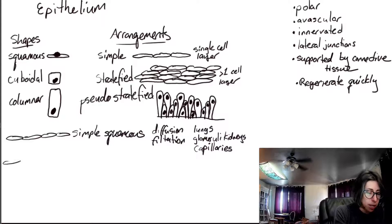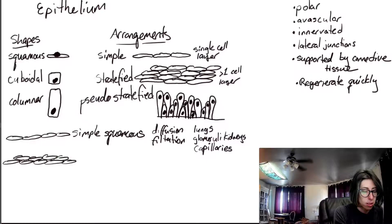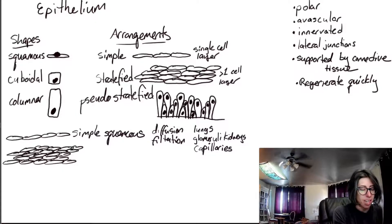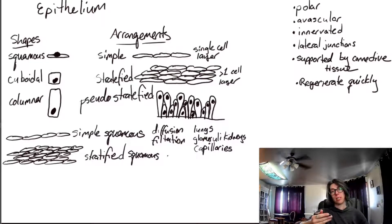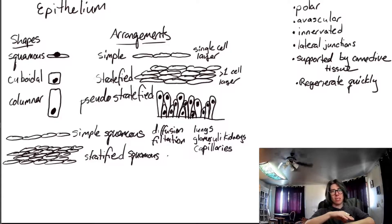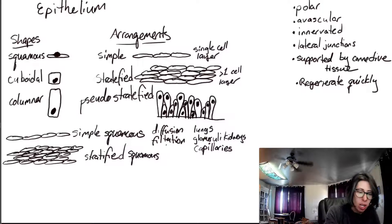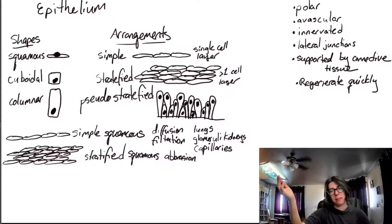Stratified squamous epithelium — most commonly this is going to be your skin. Your skin is stratified squamous, with many, many layers of squamous cells. This is where you get a lot of abrasion; cells are being scraped off. You can scratch your arm and not bleed because there are so many squamous cells that can just leave and there are still more underneath. So you need cells to spare.